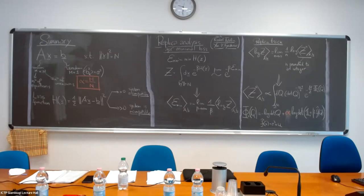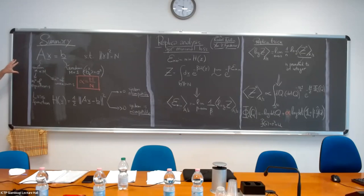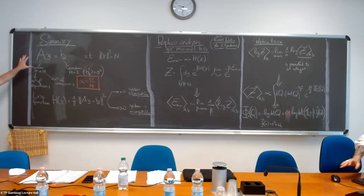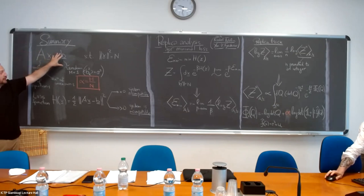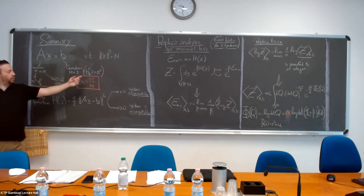Welcome back to the last couple of hours on the procrastination problem. I took the liberty of filling the blackboard already with a short summary, because there's been a large gap in the lectures. Just to refresh your memory: we are considering a system of linear equations with m equations in n unknowns. This system is random in the sense that the matrix of coefficients, which is rectangular, is random.